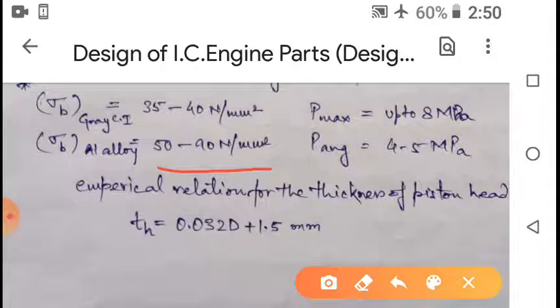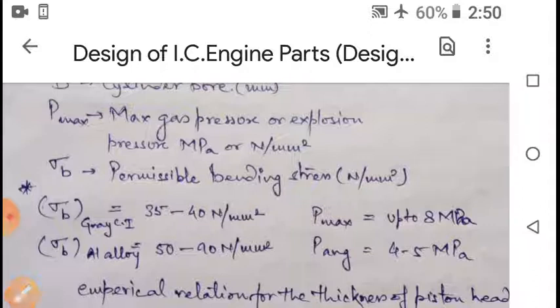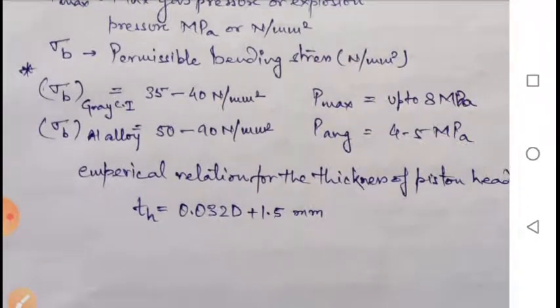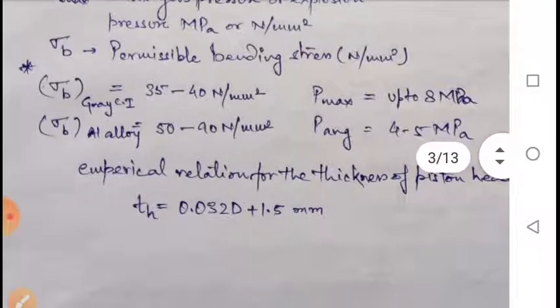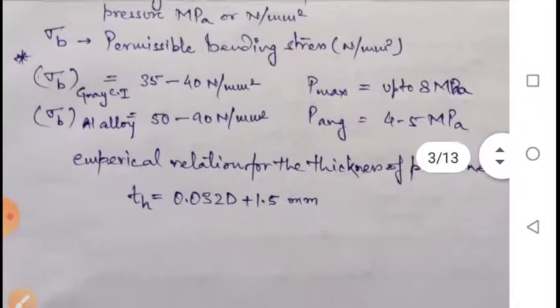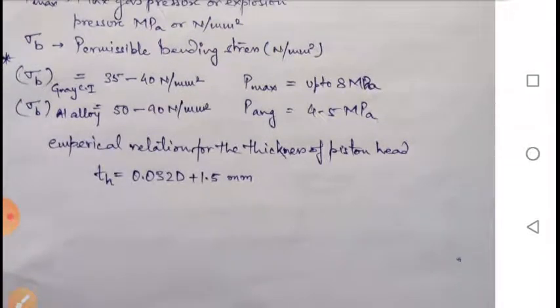For gray cast iron, σB varies between 35 to 40 N/mm², and for aluminum alloy it varies between 50 to 90 N/mm². The maximum gas pressure is up to 8 MPa and the average value is 4 to 5 MPa — use this data when sufficient data is not given in the question. There is also an empirical relation for the thickness of the piston head: Th = 0.032D + 1.5 mm.